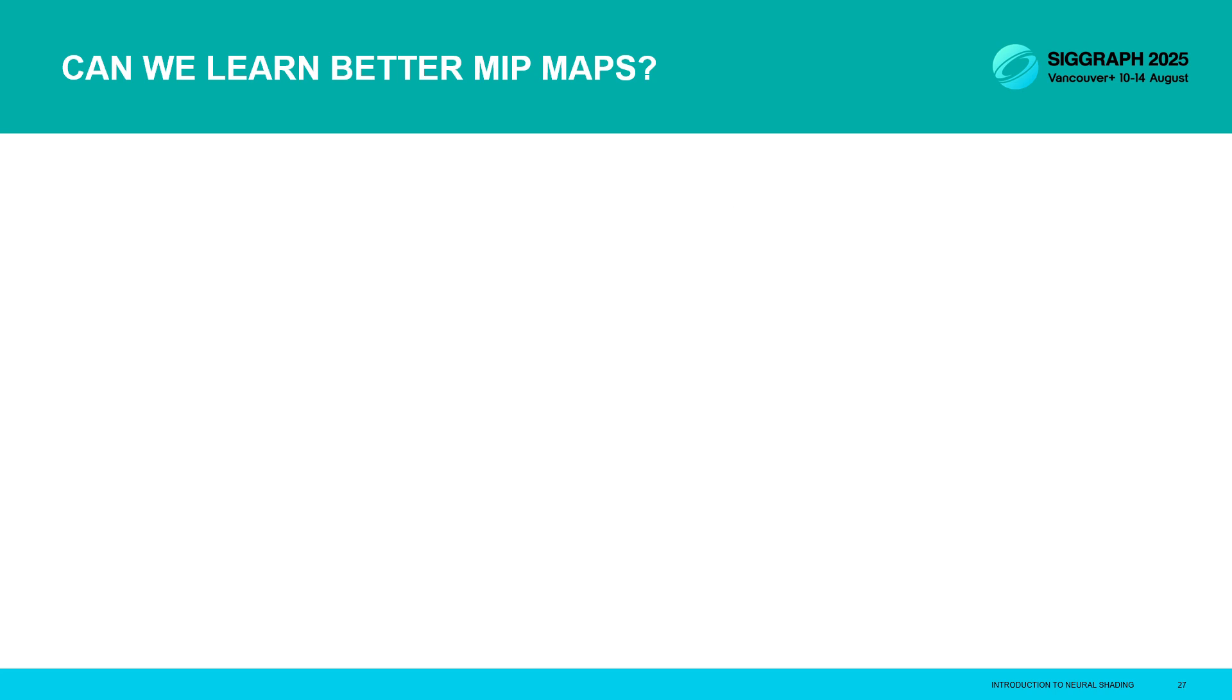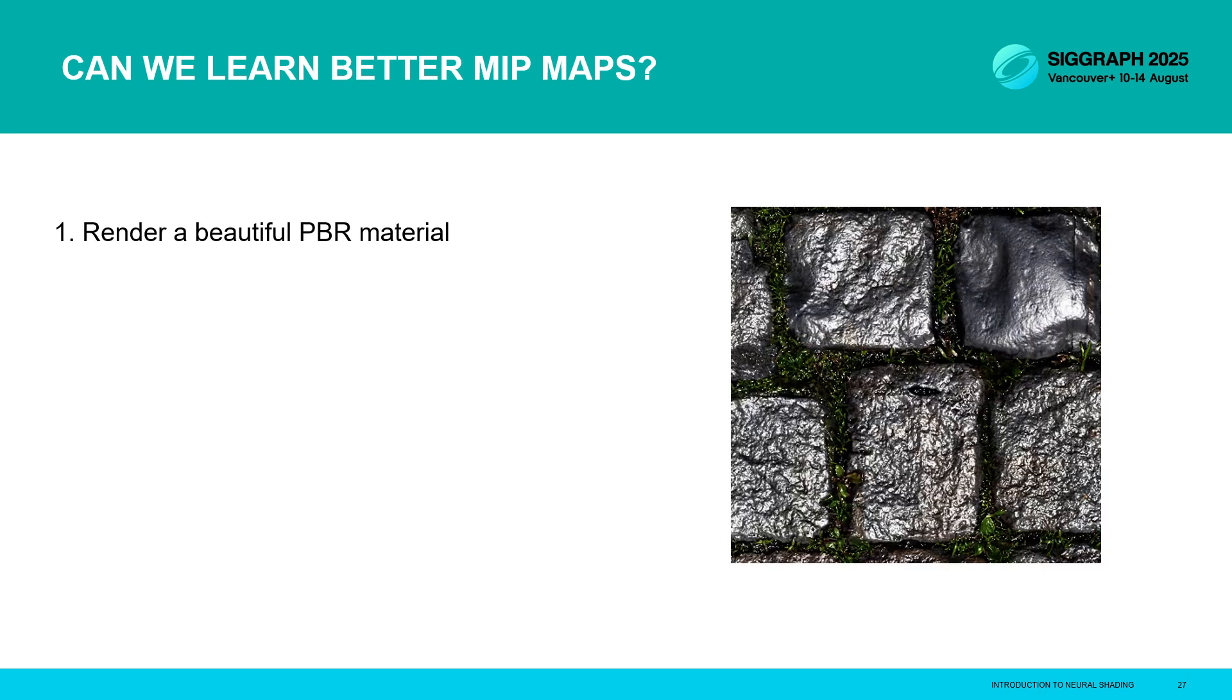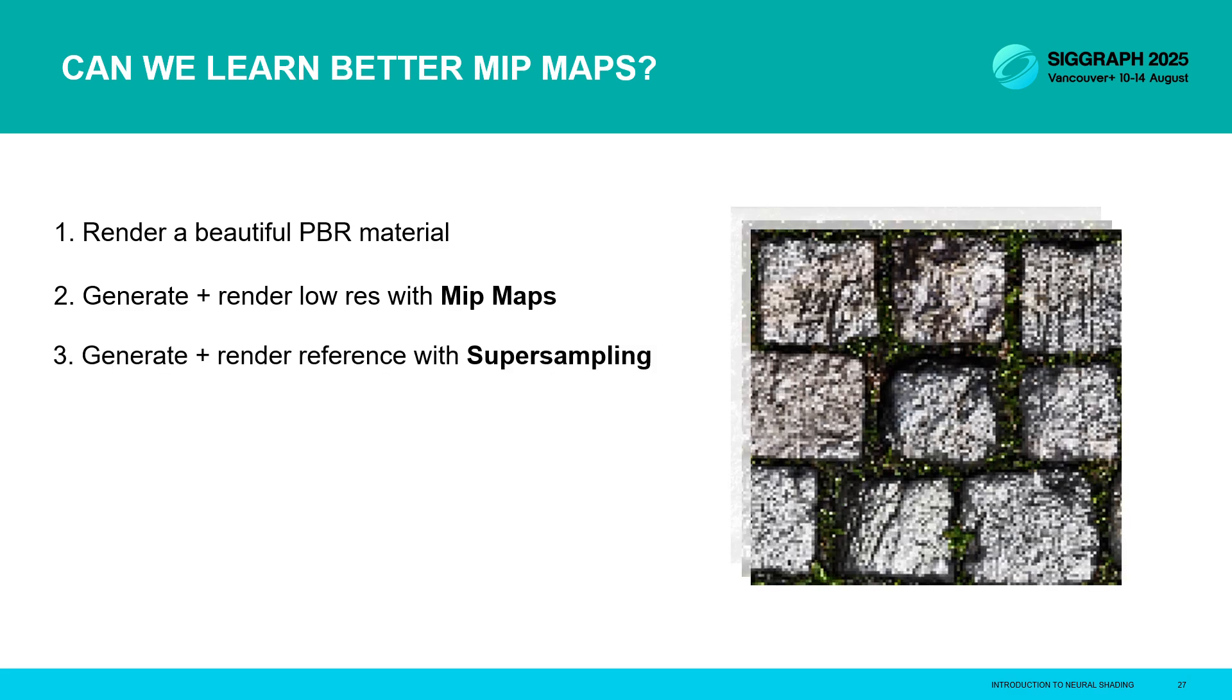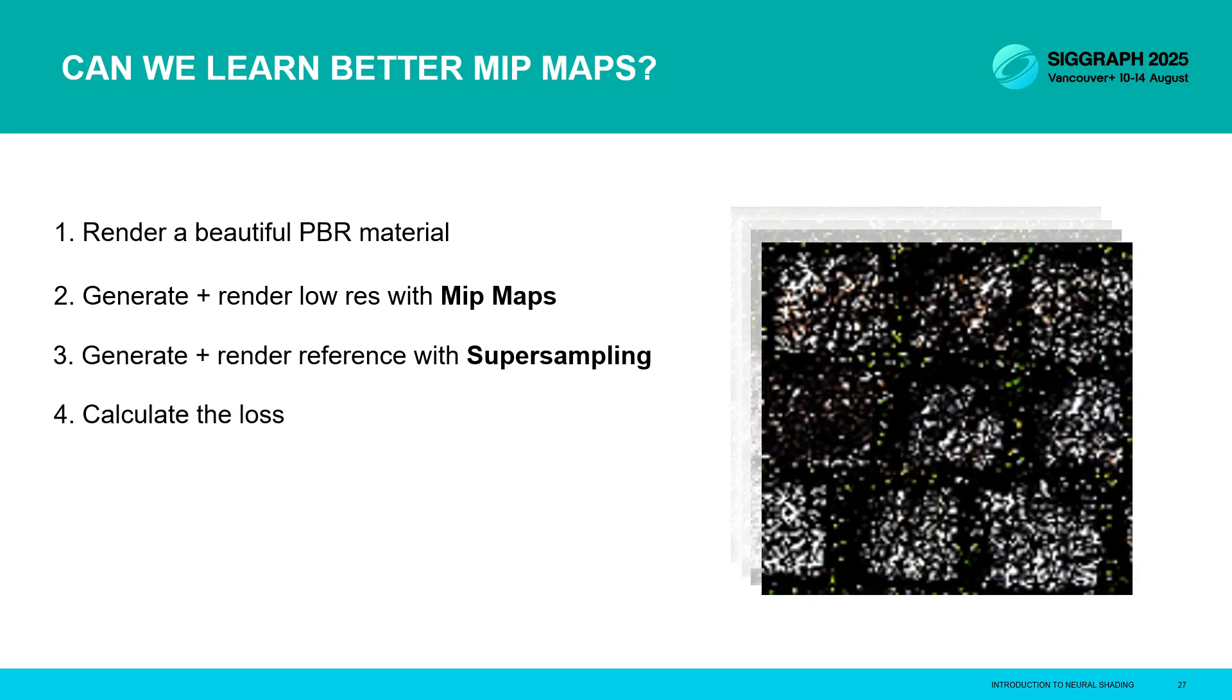So we're going to go through a few steps for this example. First up, we're going to start by writing a SlangPy program to render a really beautiful PBR material like this one here. Then we'll look at generating lower resolution mipmaps and we'll use them to render the lower resolution material. And what we'll be able to observe is these specular artifacts. Then we'll try a different approach to rendering our low res material using super sampling and hopefully we'll observe many fewer artifacts. And finally, we'll aim to generate a texture that shows the difference between the two for each pixel. So it shows us how wrong we are, which we'll label the loss texture.